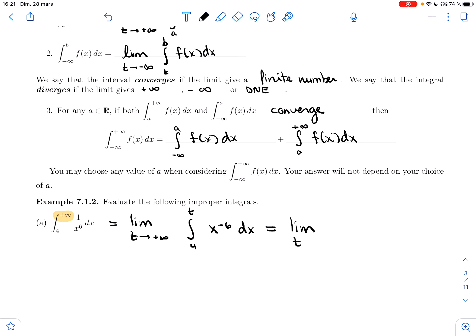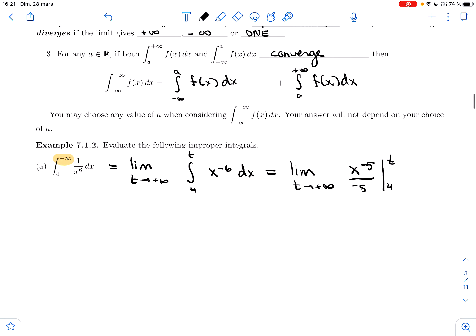Now this is an honest definite integral. I can apply our techniques to it. In this case, you just need the power rule. I'll get x^(-5) over -5. And FTC tells me that I'll take this antiderivative, plug in the two bounds. So I'm going to get t^(-5)/-5 minus 4^(-5)/-5.